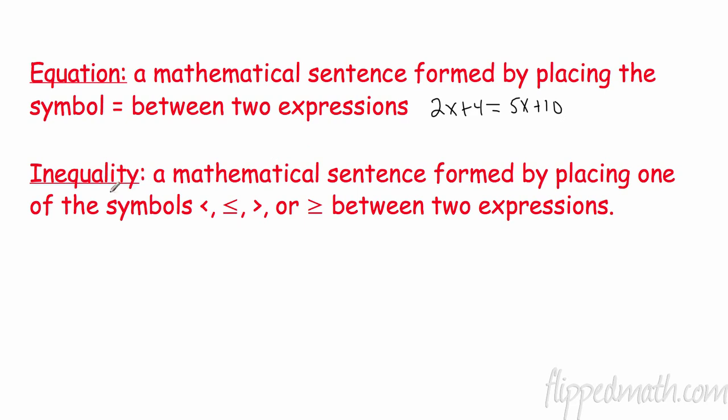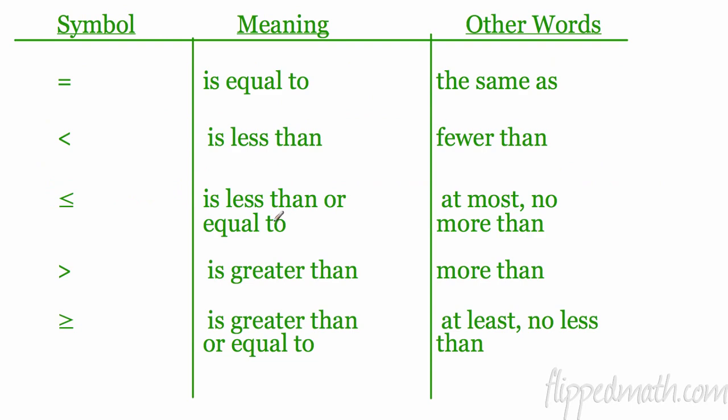Likewise, or very similarly, inequality, it's a mathematical sentence formed by placing one of these symbols: less than, less than or equal to, greater than or greater than or equal to. And even, you could include not equal to in that between two expressions. So, 2x is greater than 4. Remember, greater than opens up, it always opens to the bigger number. So, 4 is bigger than negative 1. 4 is the bigger number. It opens that way. And this is the exact same thing as this. I know it sounds different, negative 1 is less than 4, but it's the exact same thing. I could even read this: 4 is greater than negative 1. Because 4 is greater than negative 1. I just read it this way. Not a problem.